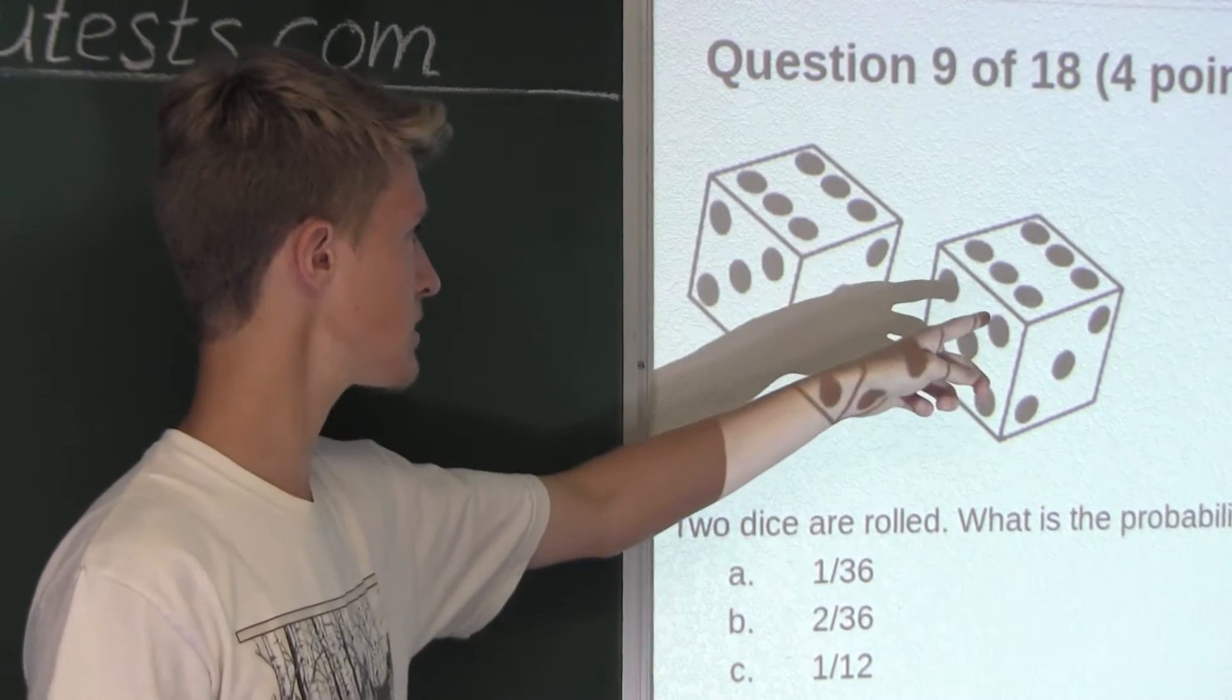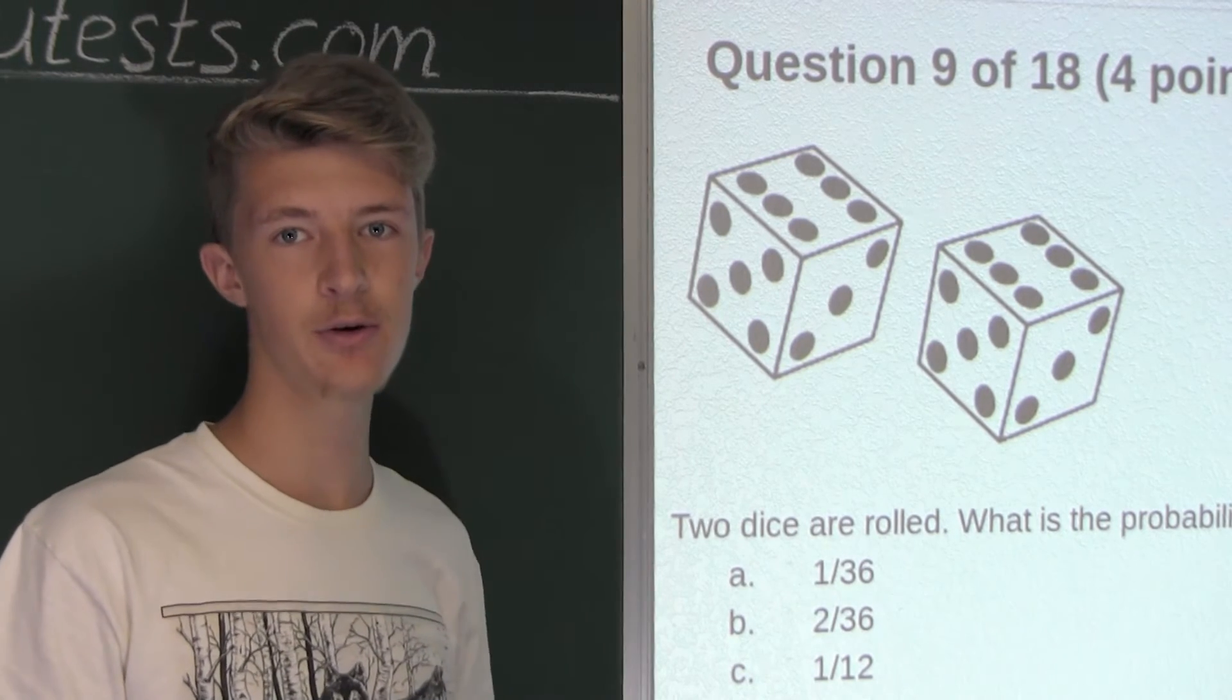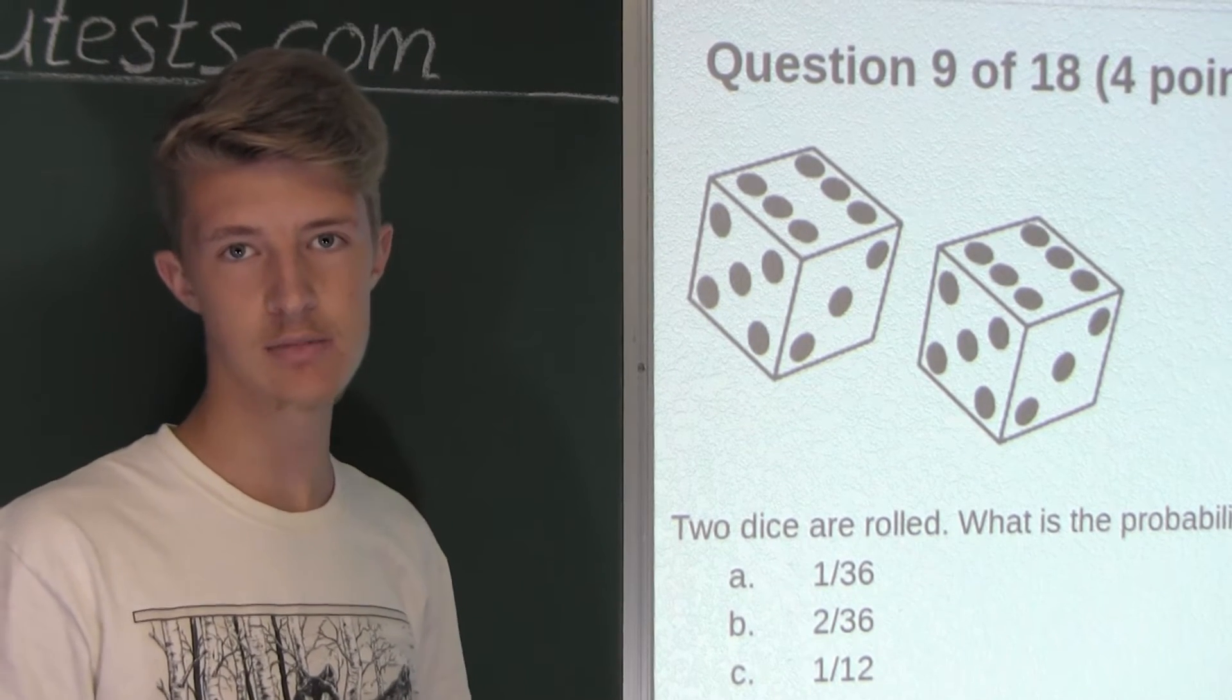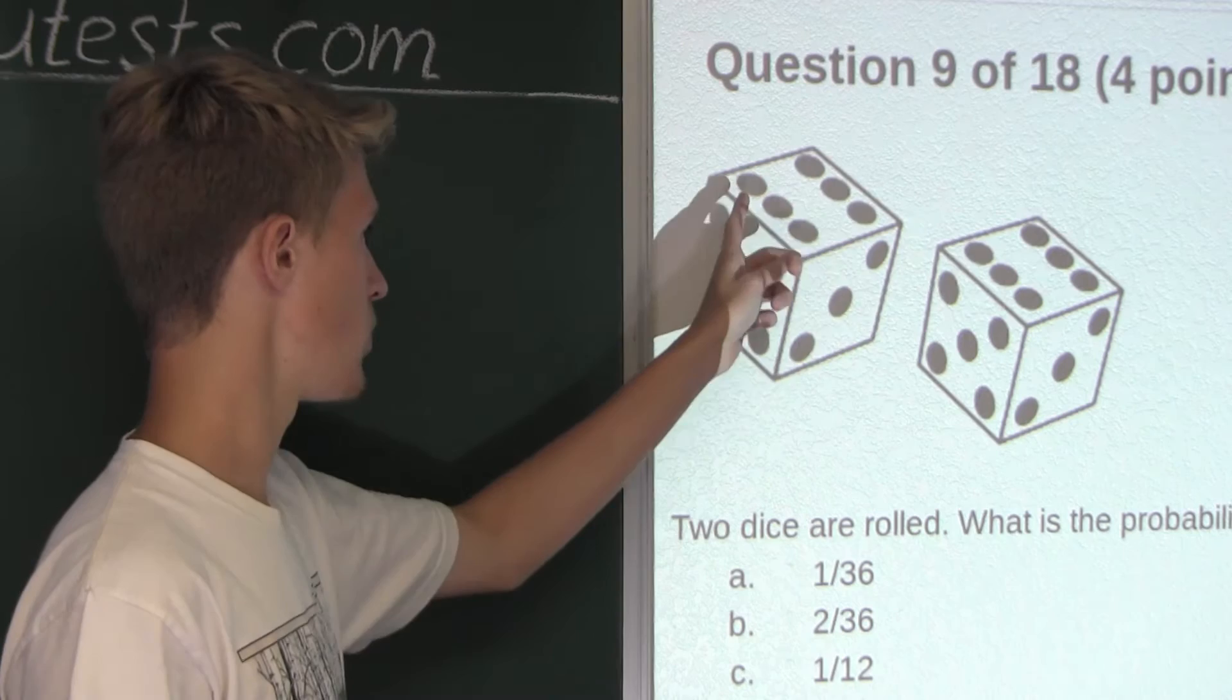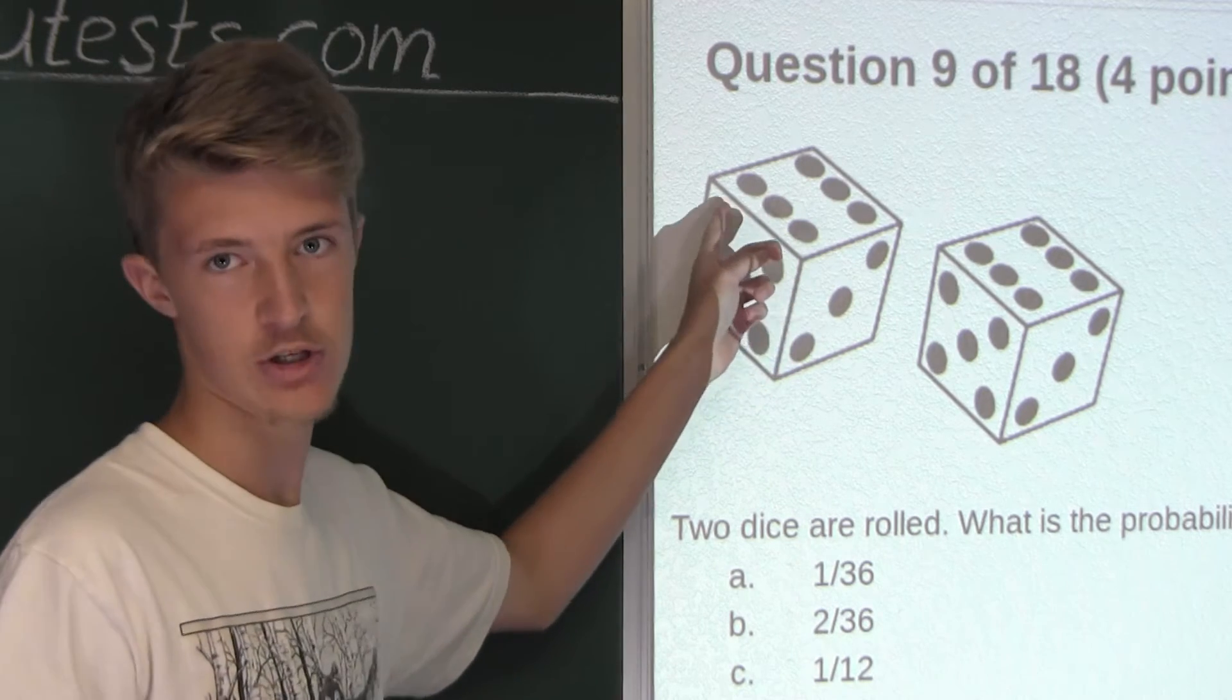Therefore, there are six times six, which equals 36 possible outcomes, if it matters which die has which number.